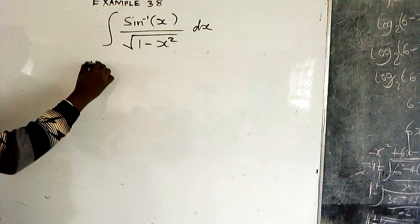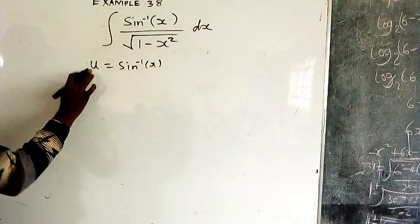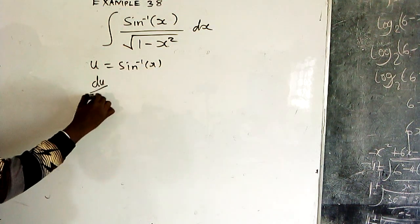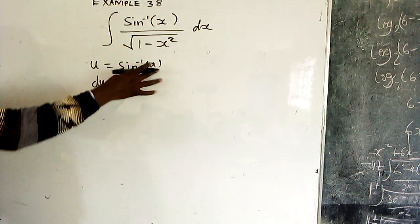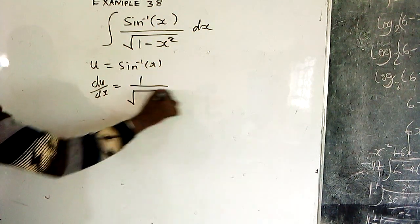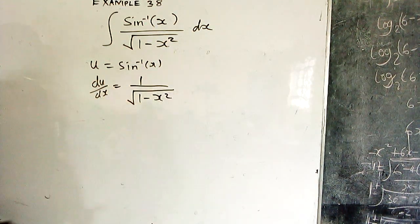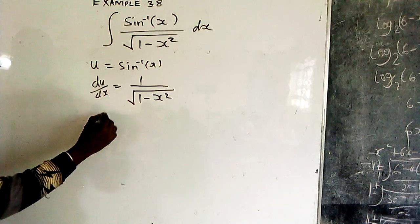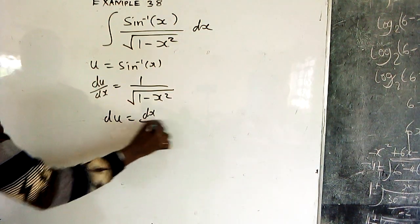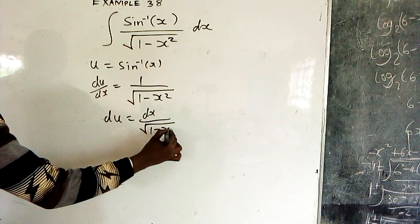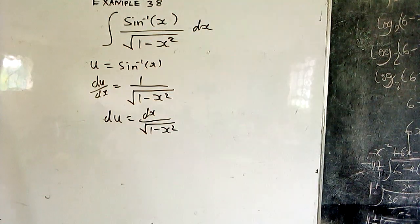If you let u be sin⁻¹(x), if you differentiate u with respect to x, you get 1/√(1-x²), isn't it? If you take dx to the other side, you have du = dx/√(1-x²).